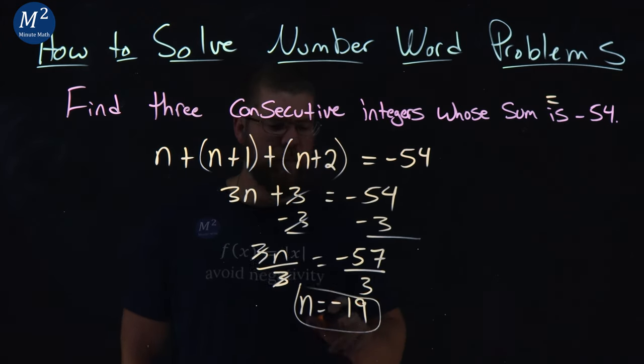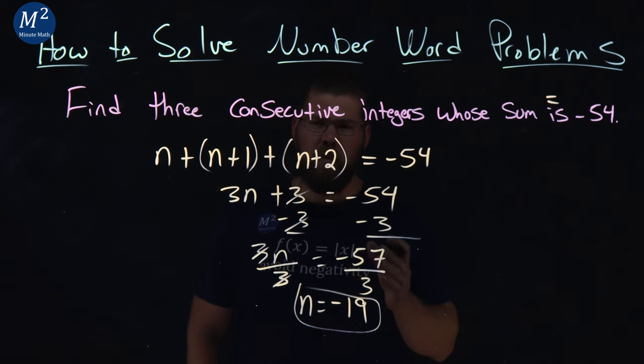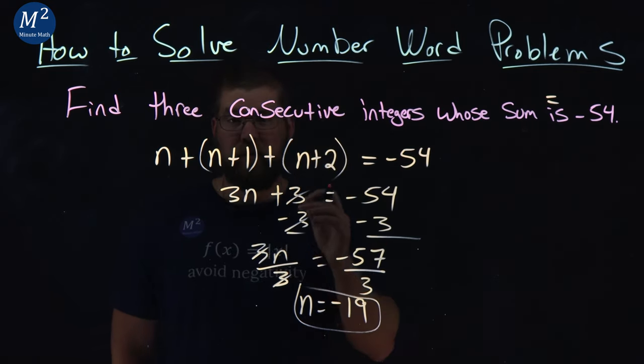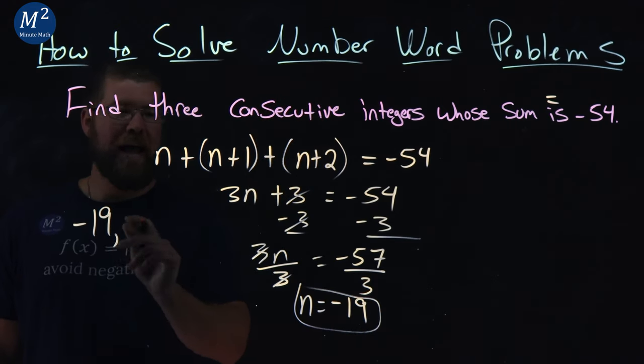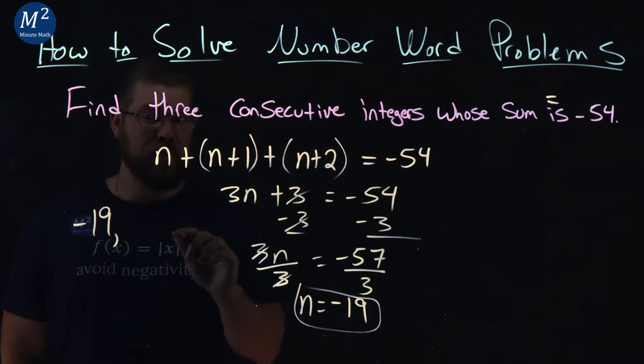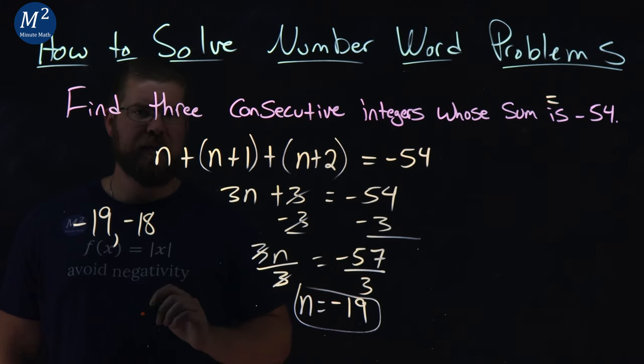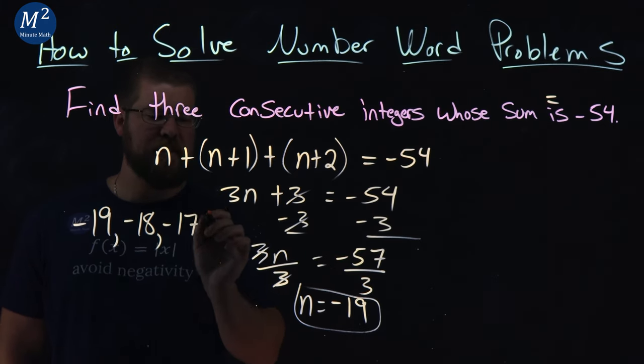So we have our first number: negative 19. But we want to find all three consecutive integers. If our first number is negative 19, we add one to get the next one. That's negative 18.